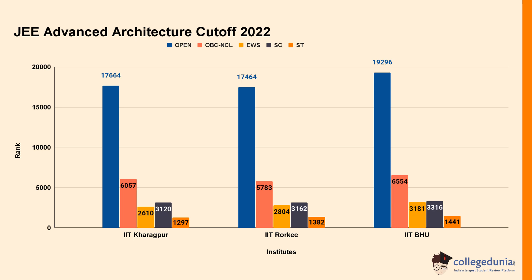For IIT Roorkee Architecture in 2022, the cut-off rank was 17664 for Open category, 5783 for OBC-NCL, 2804 for EWS, and 3162 for SC.